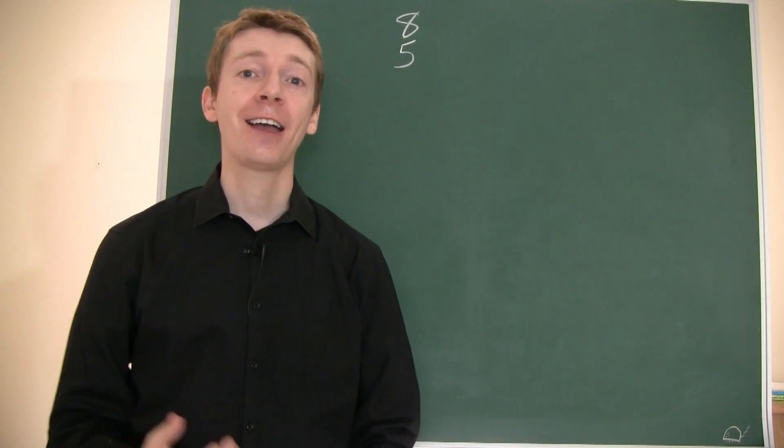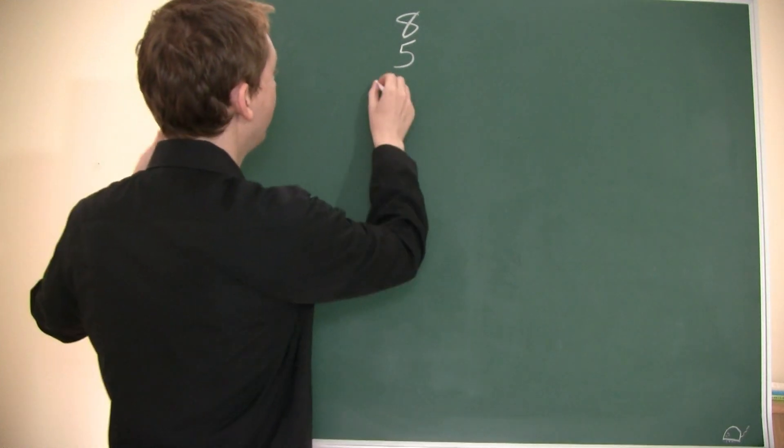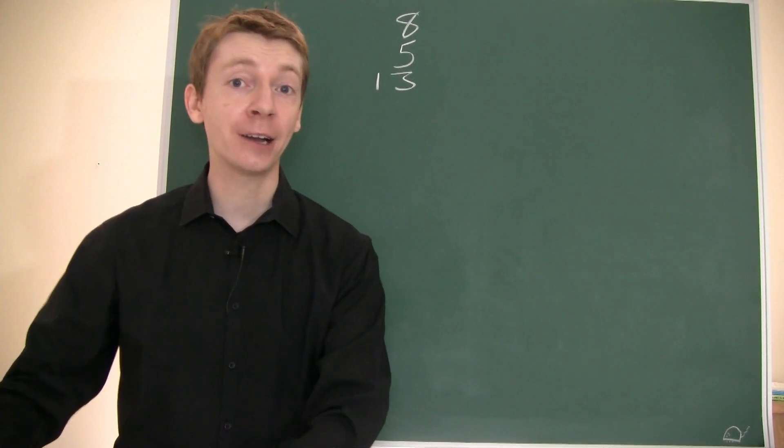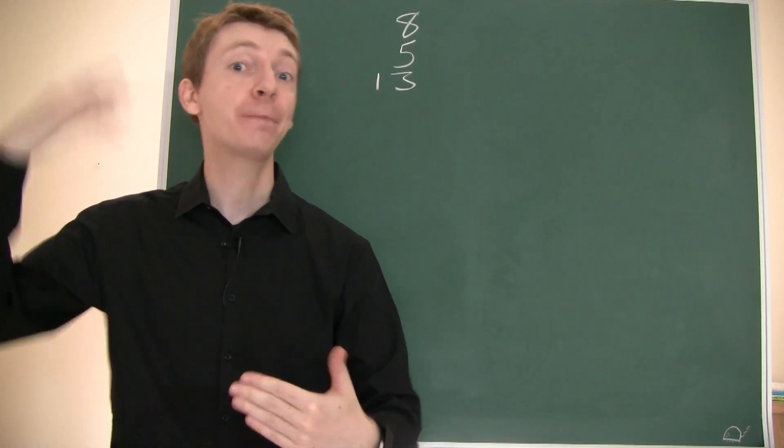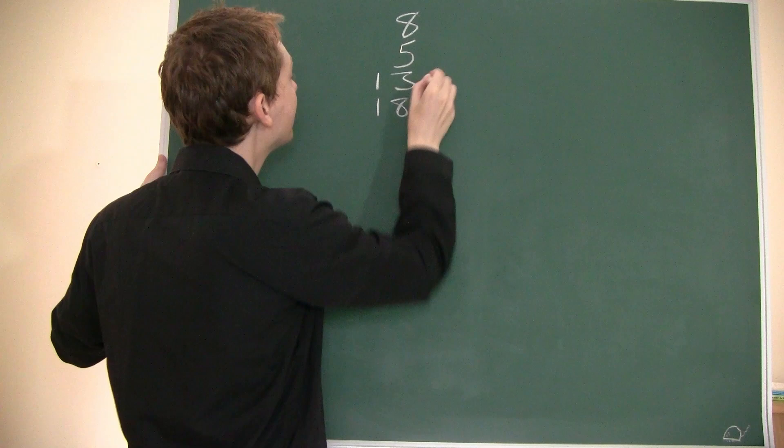Now you ask them to add those together and to write the result underneath. So they're going to write down 8 plus 5 is 13, underneath like that. To make the fourth number, well you add the third to the one above it. So in this case, 5 plus 13 is 18.